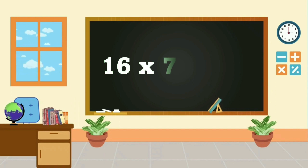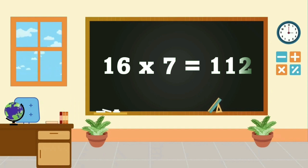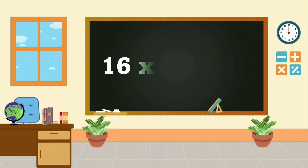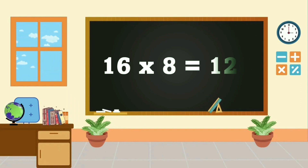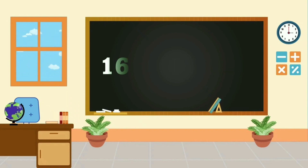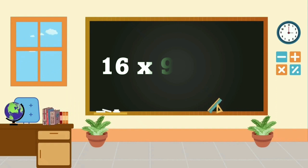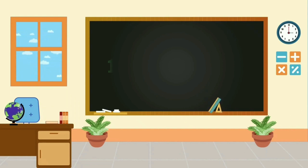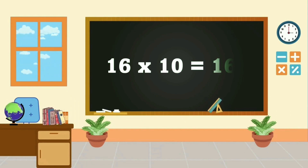16 7s are 12, 16 8s are 128, 16 9s are 144.